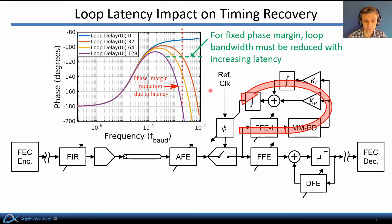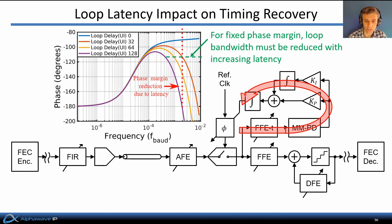Latency in the timing recovery path, introduced for example by digital equalization, impacts the stability of the timing feedback loop. If equalization complexity and thus latency in that path increases, the timing recovery loop bandwidth has to be reduced to maintain a constant phase margin around the loop. There are therefore many subtle interactions between equalization and timing recovery performance that become increasingly significant at higher data rates and tighter jitter budgets.